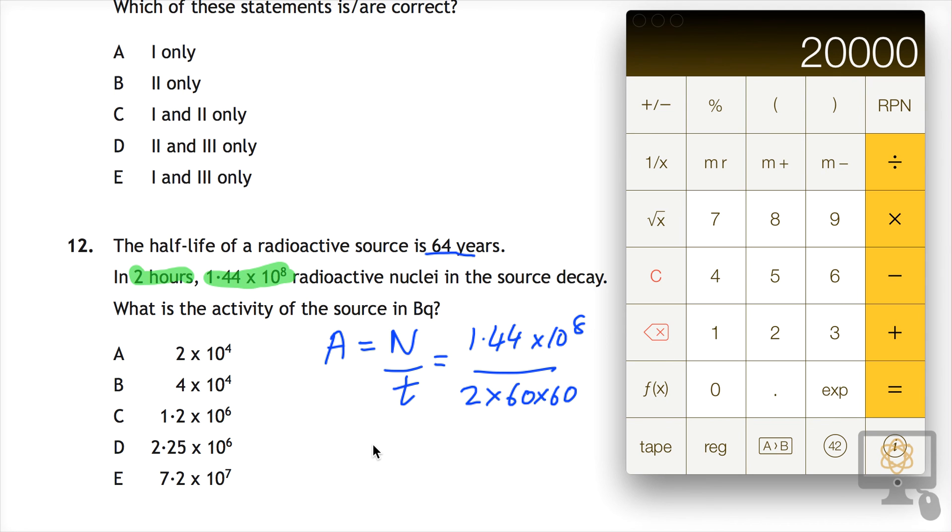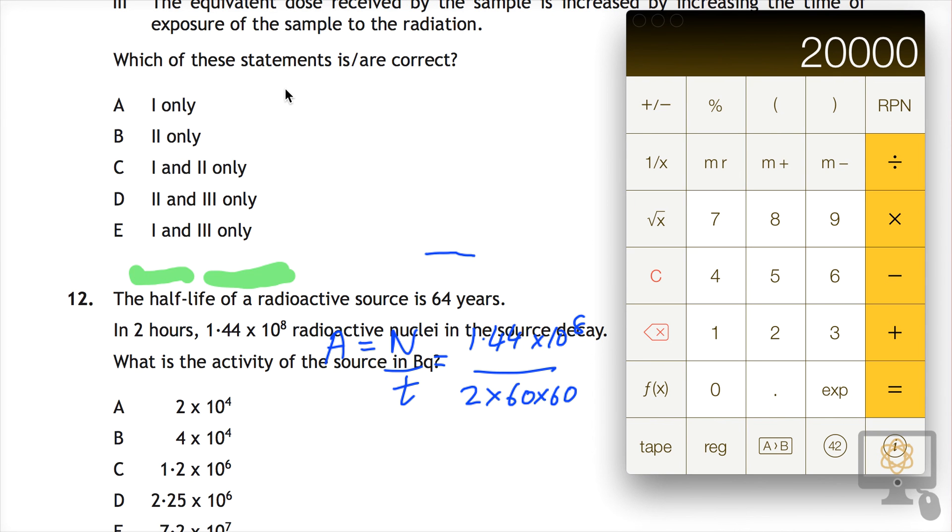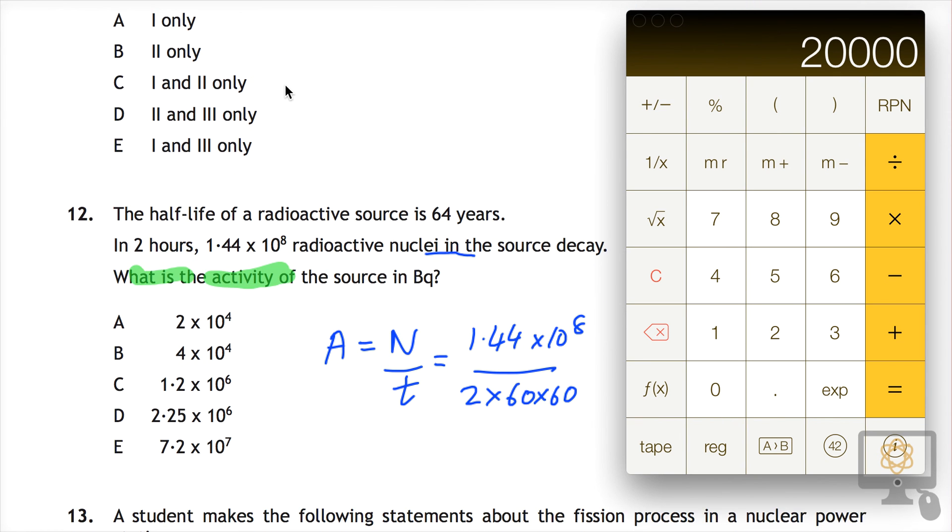Press equals and we've got our answer. So we're told then that the activity is, if I can get my pen up again, the activity is 20,000 becquerels.